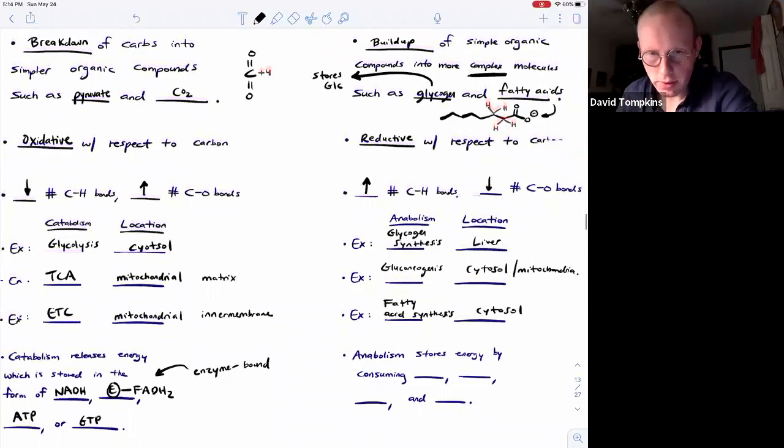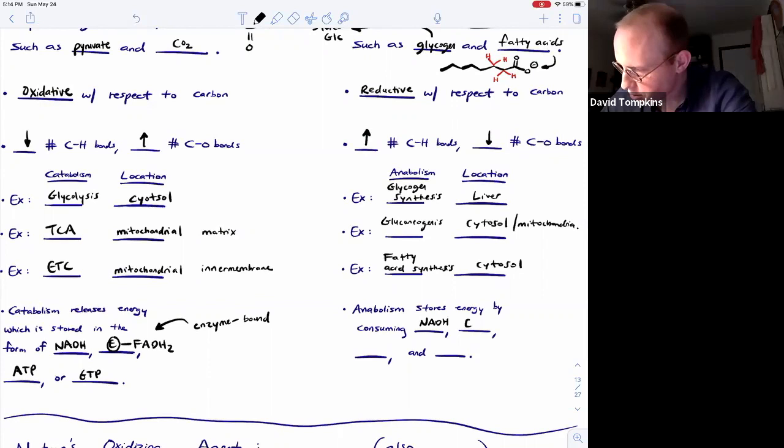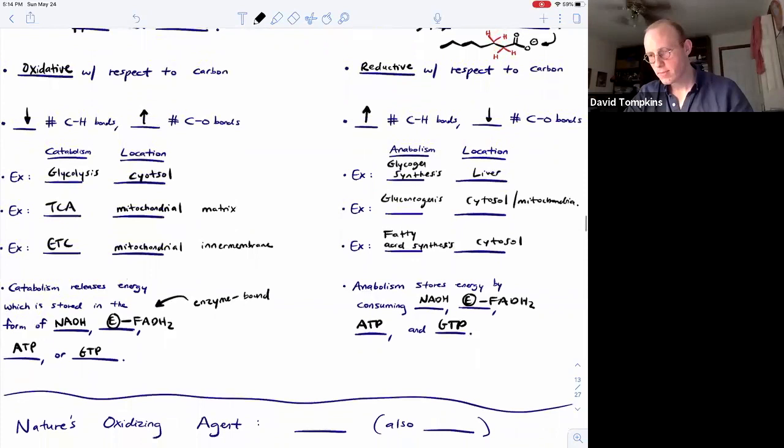So anabolism is going to store energy by consuming electron carriers or reducing agents like NADH and/or enzyme-bound FADH2, and they will also be processes that require the input or consume ATP and/or GTP.